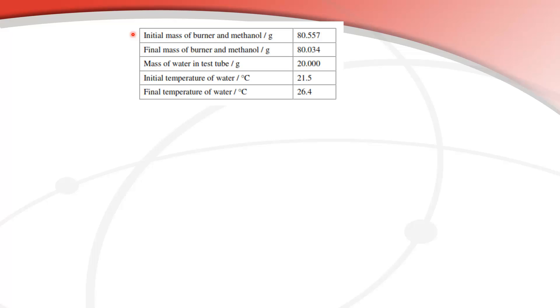So here are the results from that experiment. We have the initial mass of the burner and the methanol and the final mass of the burner and the methanol. We have the mass of the water in the test tube, the initial temperature of water in the test tube and the final temperature of water in the test tube.